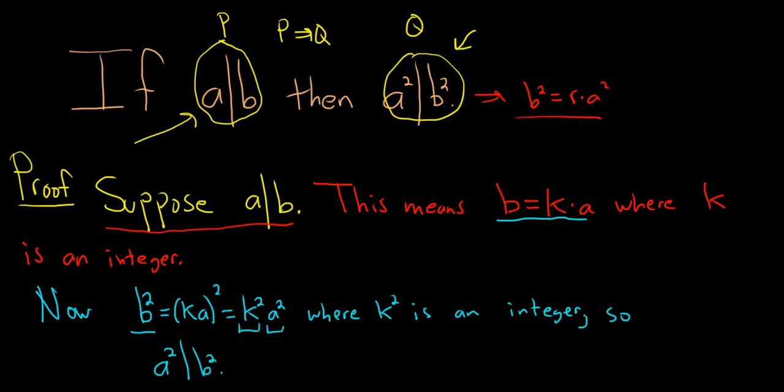And that completes the proof. So again, you start by assuming that p is true. So you write down, suppose a divides b. Then you write down what it means for a to divide b.